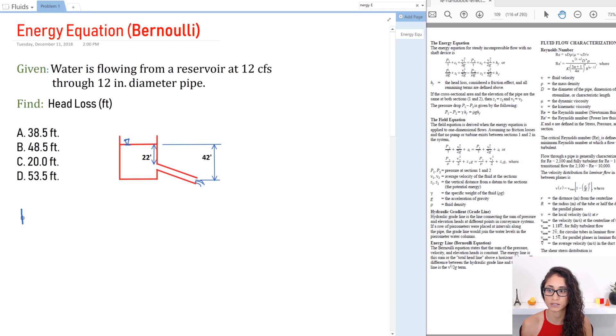So we have P1 over gamma plus Z1 plus V1 squared over 2g is equal to P2 over gamma plus Z2 plus V2 squared over 2g plus the head loss. So here they have head friction because they determine it as a friction loss but then here I'm just going to call it HL because we don't know what type of loss it is. It could be friction plus due to entrance and exit so we're just going to call it HL.